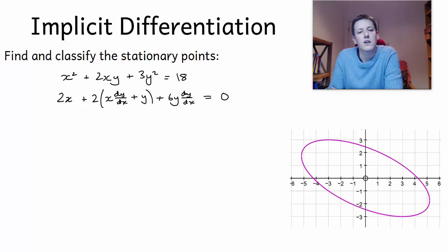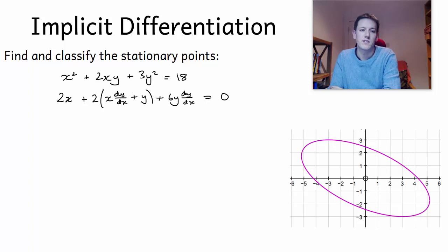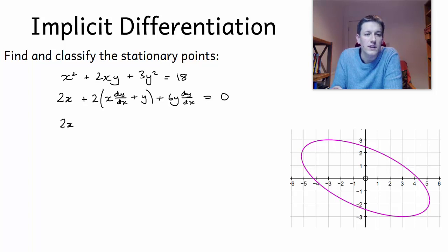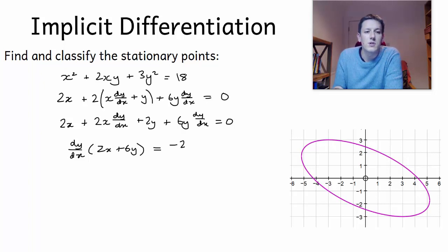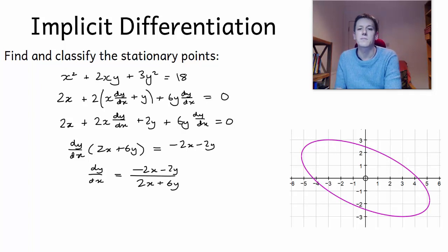So if we rearrange this — there are two ways to go from here. I can rearrange this to get an explicit formula for dy/dx as we've done before, and I'm going to do that to make a point. If we multiply out, I get 2x plus 2x times dy/dx plus 2y plus 6y times dy/dx equals 0. We can then factorize: dy/dx times (2x plus 6y) is equal to minus 2x minus 2y.